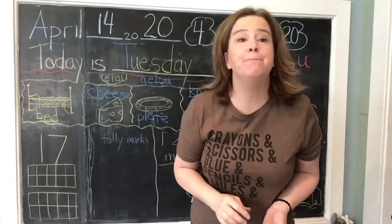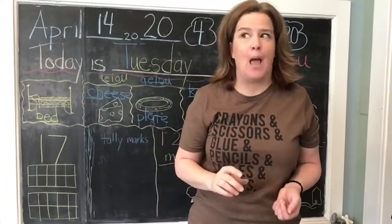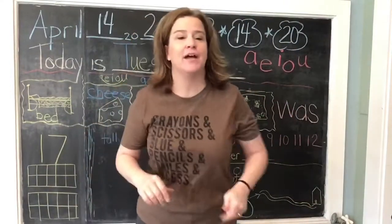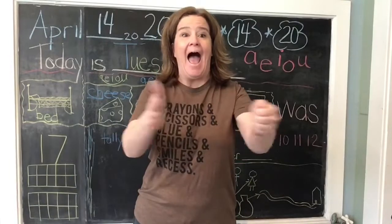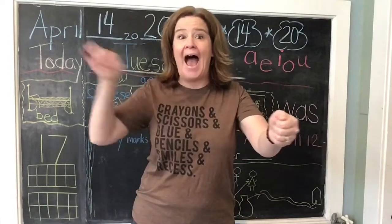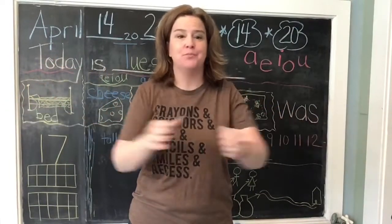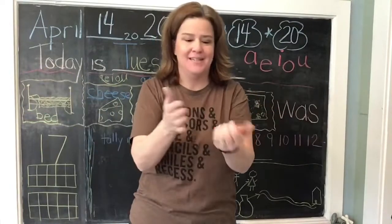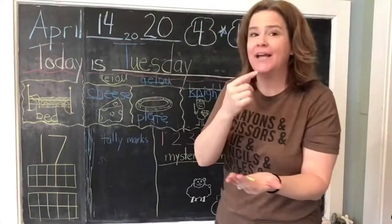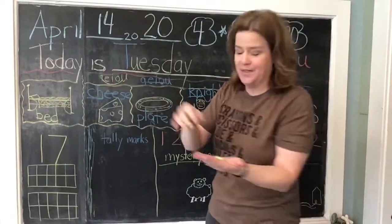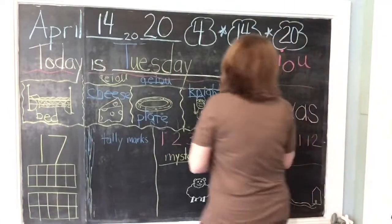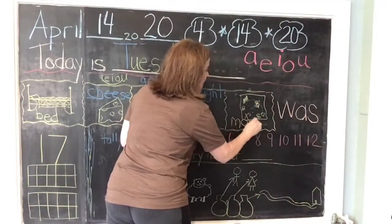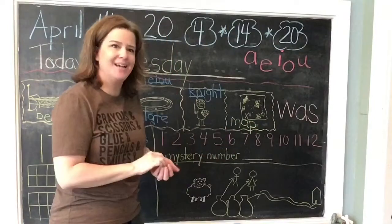My next one is 'map' — it's a treasure map! Let's pull it apart: M-A-P. Pull it apart again: M-A-P. Map. I hear a short A. So I'm going to write my word 'map' in green: M-A-P. Map. Nice job!